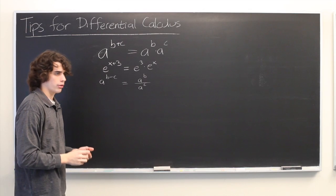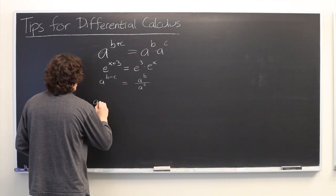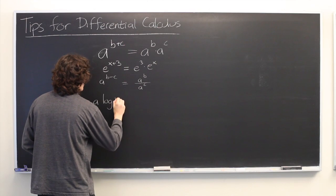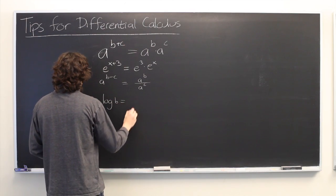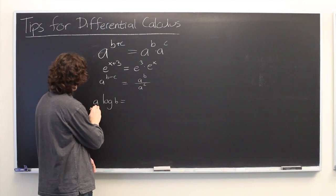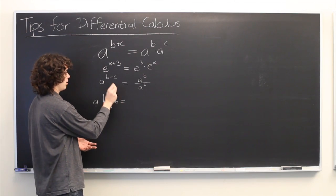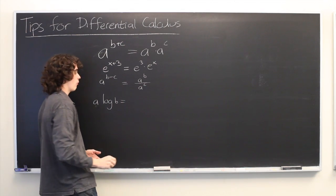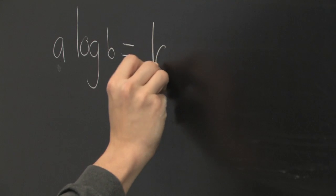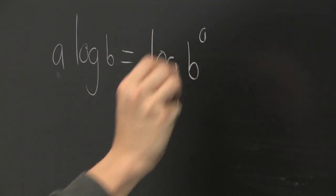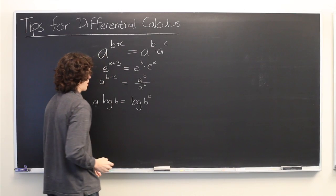Okay, what about logarithms? Let's say you've got something like a times log of b. Well, if you're multiplying a log by some constant a, you can actually bring that inside and it becomes the exponent of whatever's on the inside. So this becomes log of b to the a power.